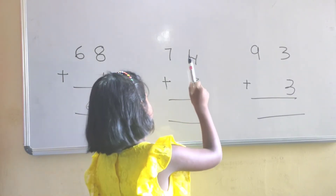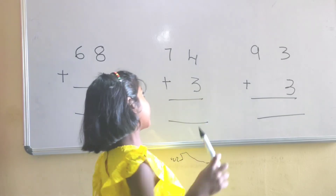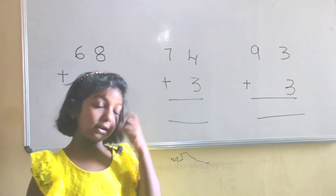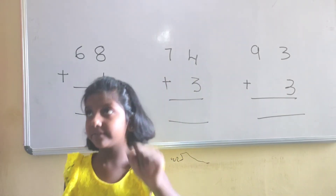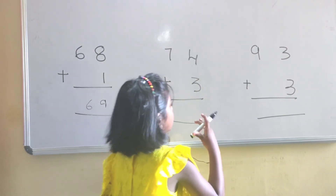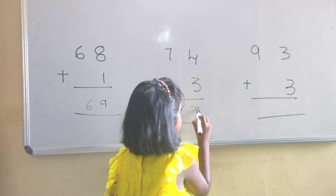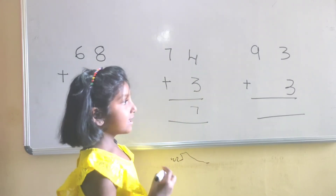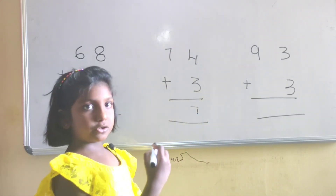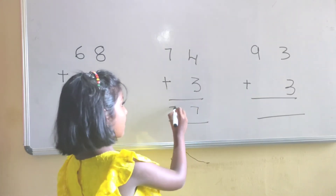That is 7, 4, 3. 4 in mind, after 5, 6, 7. The answer is 7. Here there is no number to add, writing 7.